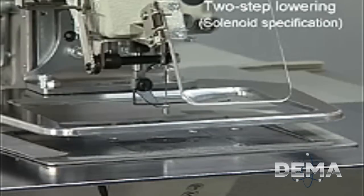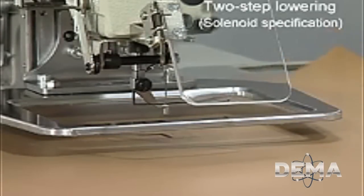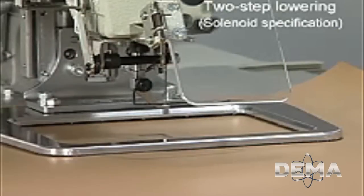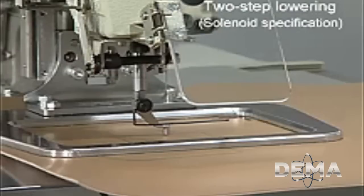The work clamp lowering operation can be selected from three types. Two-step lowering enables quick and accurate positioning of materials and reduces the total cycle time.